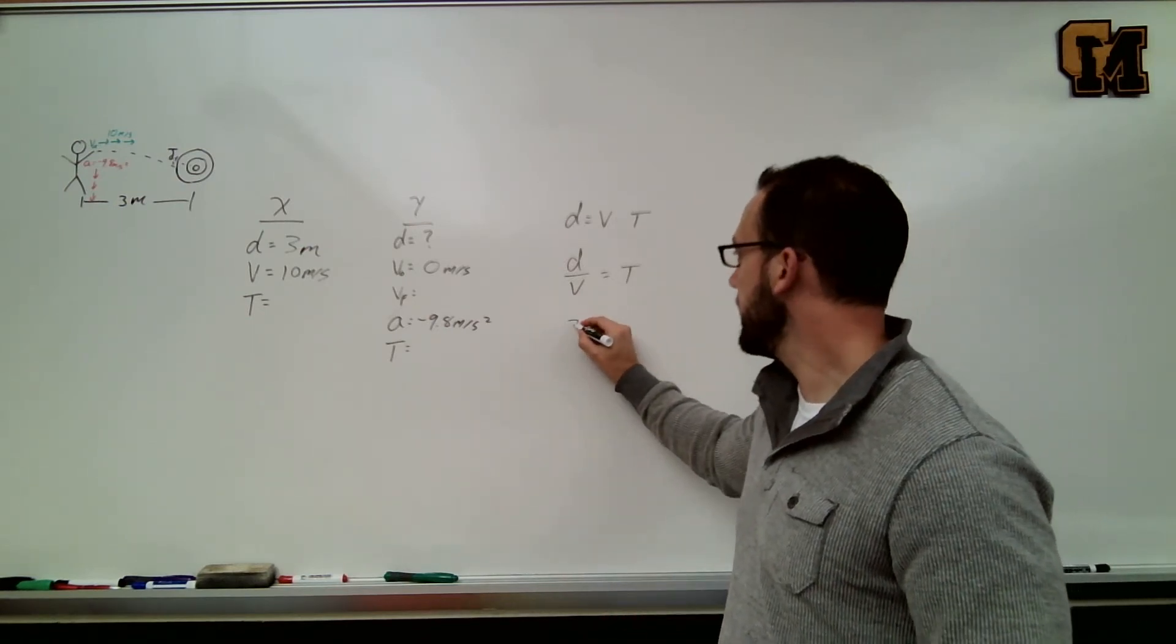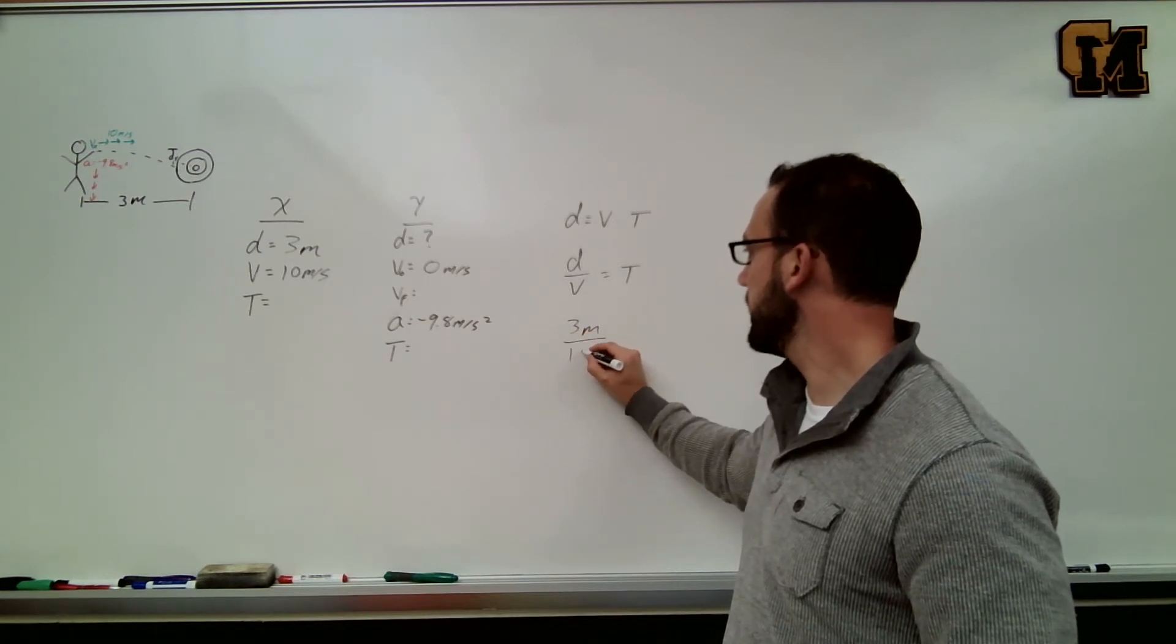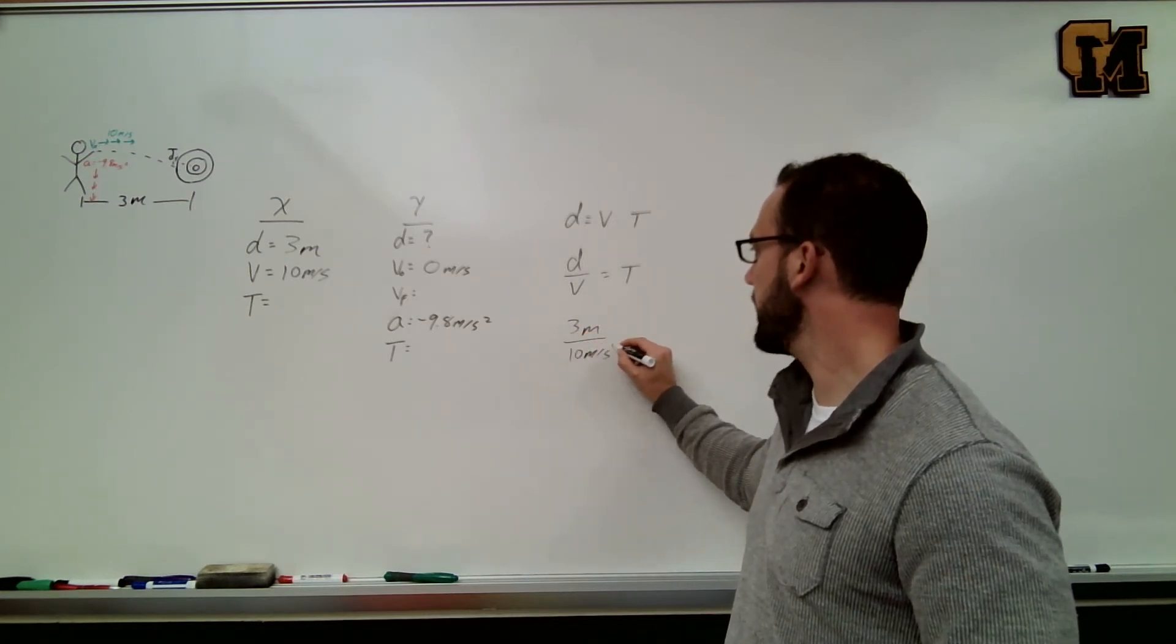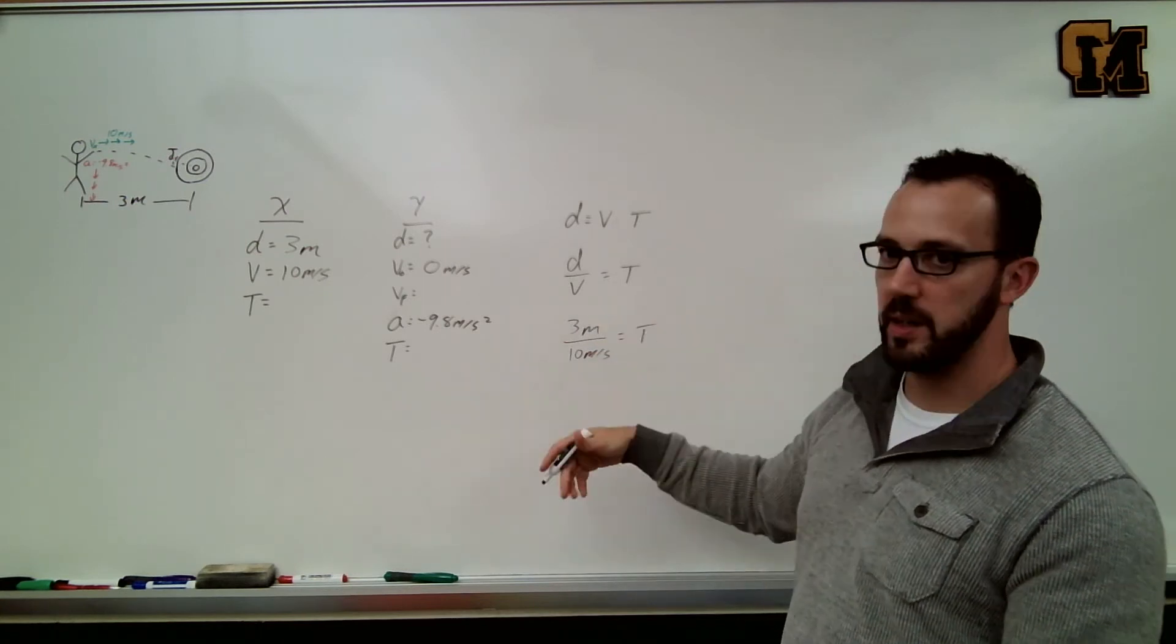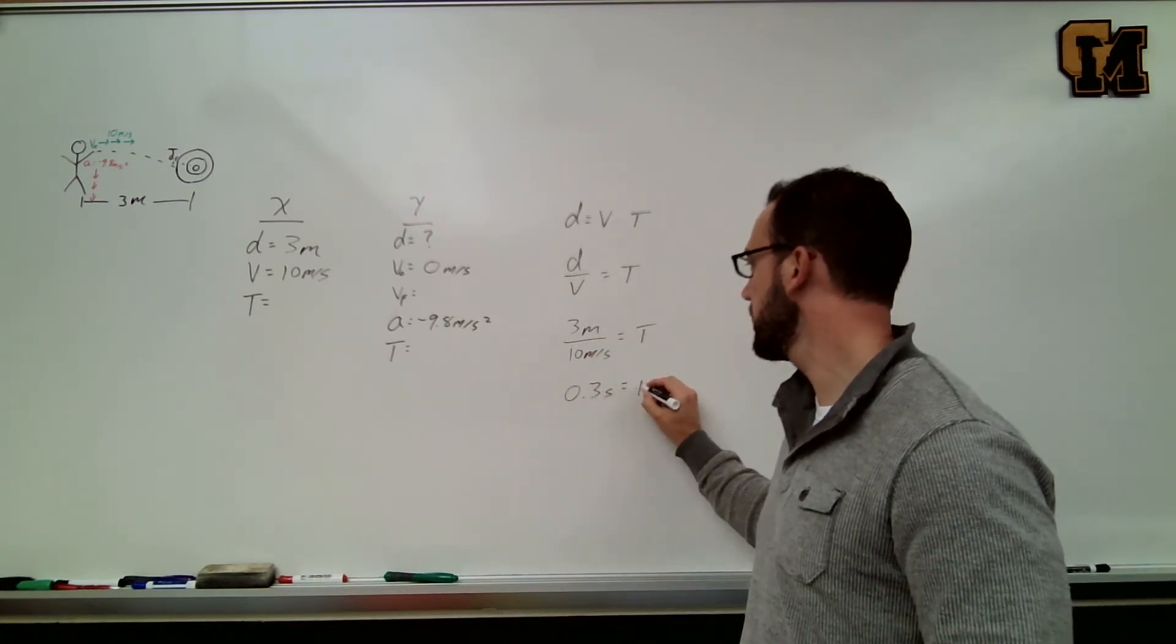My d is 3 meters and the velocity is 10 meters per second. 3 divided by 10 is 0.3 seconds for time.